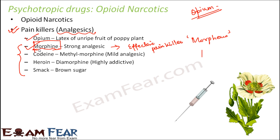Codeine is chemically methyl morphine and is a mild analgesic — not as strong as morphine. It is an ingredient of many medicines and also cough syrups. However, it has a side effect: if you take too much cough syrup containing codeine it might cause constipation.